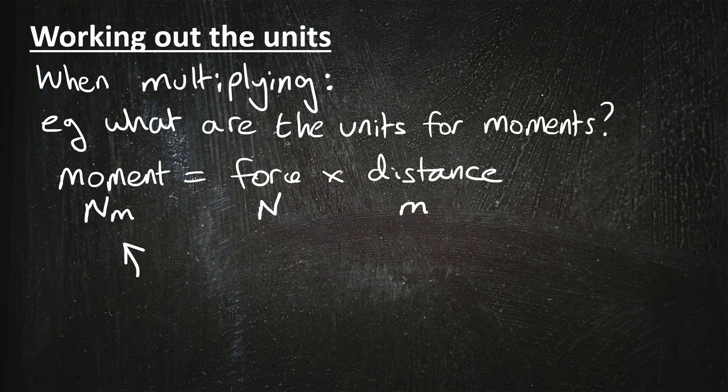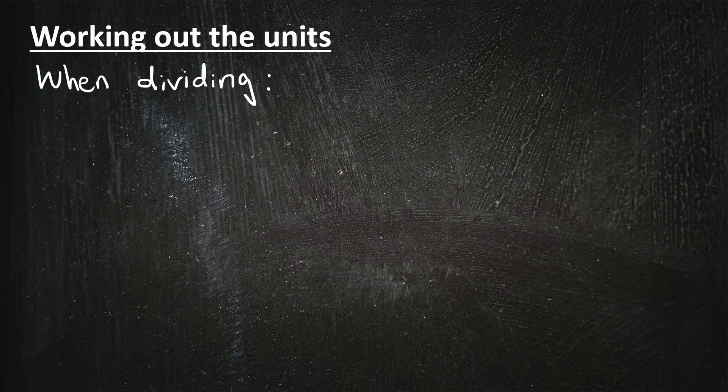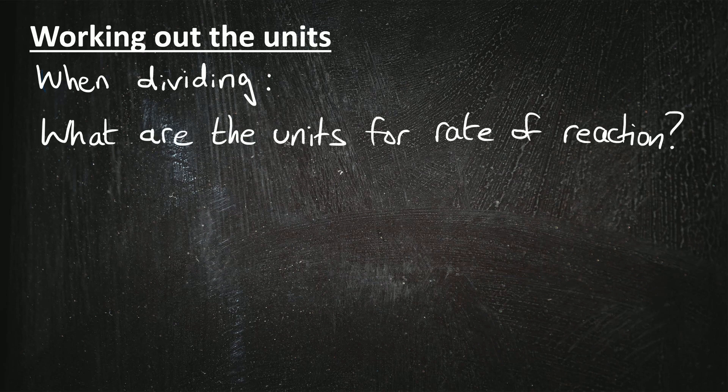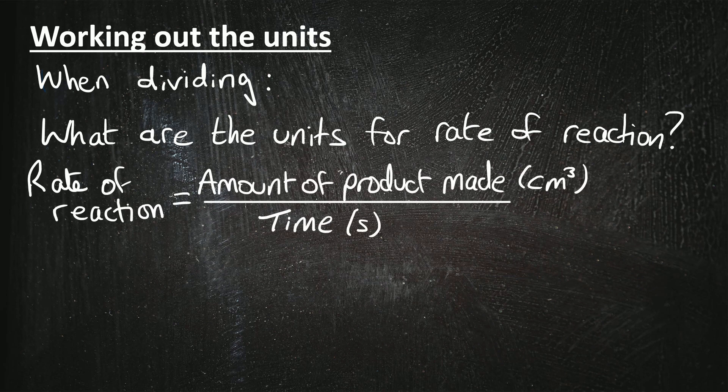Now to work out the units when you're dividing numbers, let's have a look at an example. What are the units for the rate of reaction? So one way of working out the rate of reaction is it's the amount of product made, so that would be measured in centimeters cubed if it's a gas, and it's divided by the time which would be in seconds. So if we think about the units, we've got a centimeters cubed divided by an s, so that becomes cm cubed slash s. Think about the dividing line becoming the slash of the units.